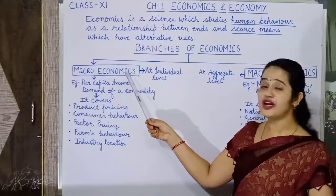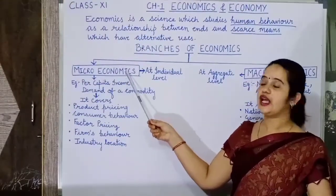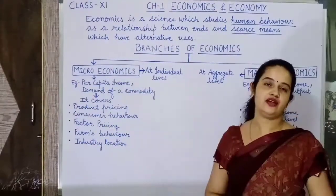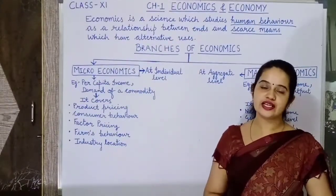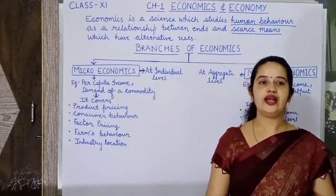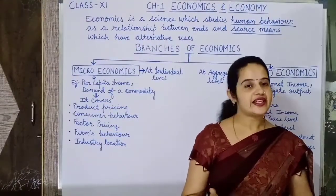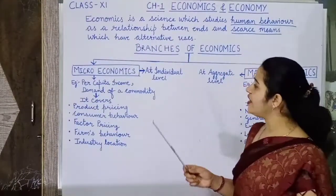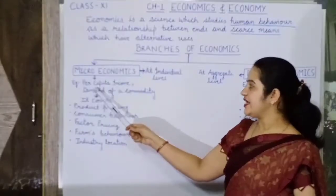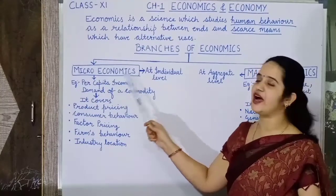Microeconomics is that branch of economics which studies economic variables at individual units. The individual units here are consumer, household, firm, industry, price of the product, etc. Examples of microeconomics include per capita income and demand of a commodity. Microeconomics also examines how scarce resources are to be allocated among people efficiently.